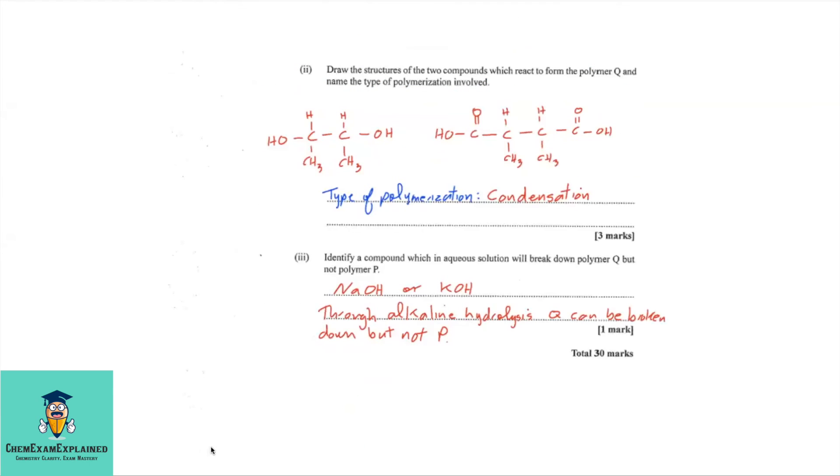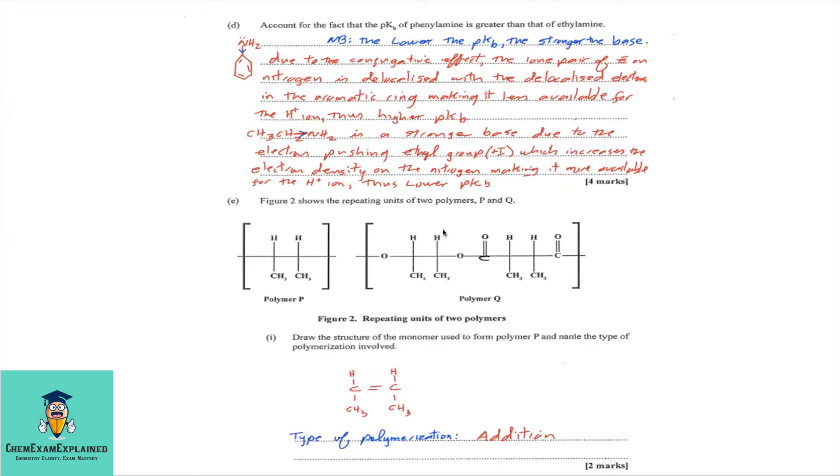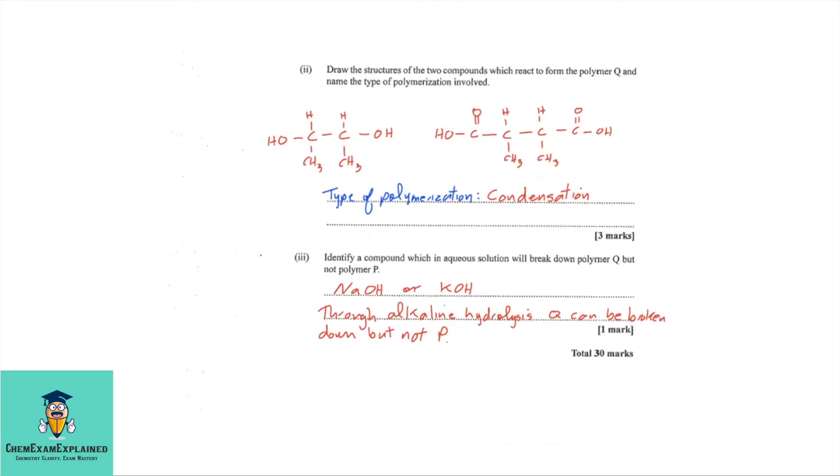E, part 2. So, draw the structures of the two compounds which react to form the polymer Q, and name the type of polymerization involved. Now, if you look back at the structure, it's always important to look back at the structure. You'll see that we have this repeating unit. So, it's a diol and a diacid. And we remove water from the molecule. So, if you go back to the question, you'll see that this is the diol and this is the diacid.